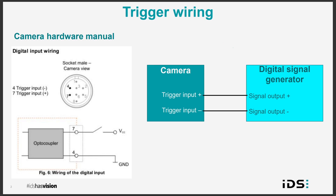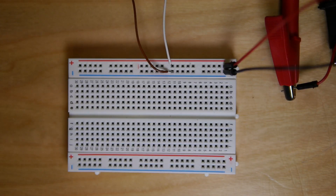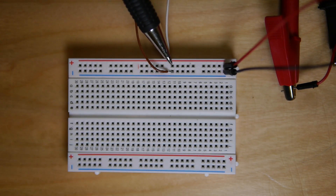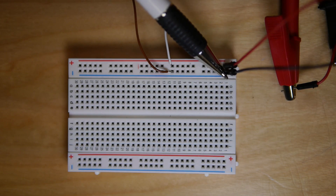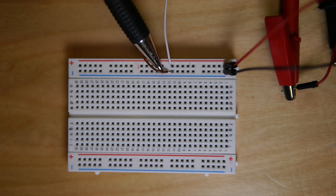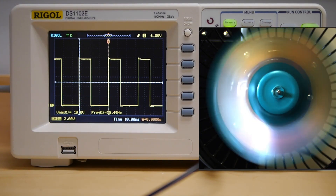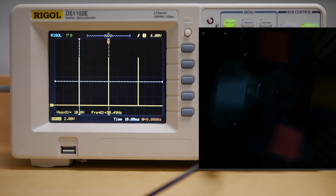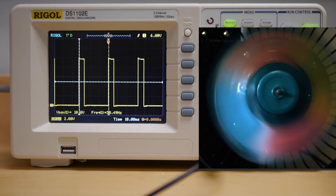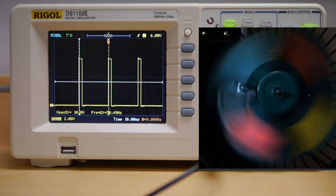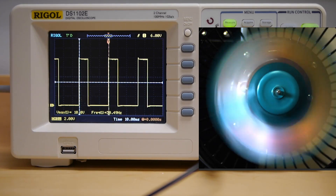Connect positive to positive and negative to negative. Following the digital input wiring guide, I connect the positive terminal of the digital signal generator to the positive trigger input white lead of the camera, and then connect the negative terminal of the digital signal generator to the negative trigger input brown lead of the camera. With the wiring completed, I can turn my attention back to Peak Cockpit, where the camera is capturing images. By modifying the frequency and duration of the digital signal, I can change the frame rate and exposure time of the camera. A basic trigger configuration such as this one allows the camera exposure to be precisely controlled by an external device.